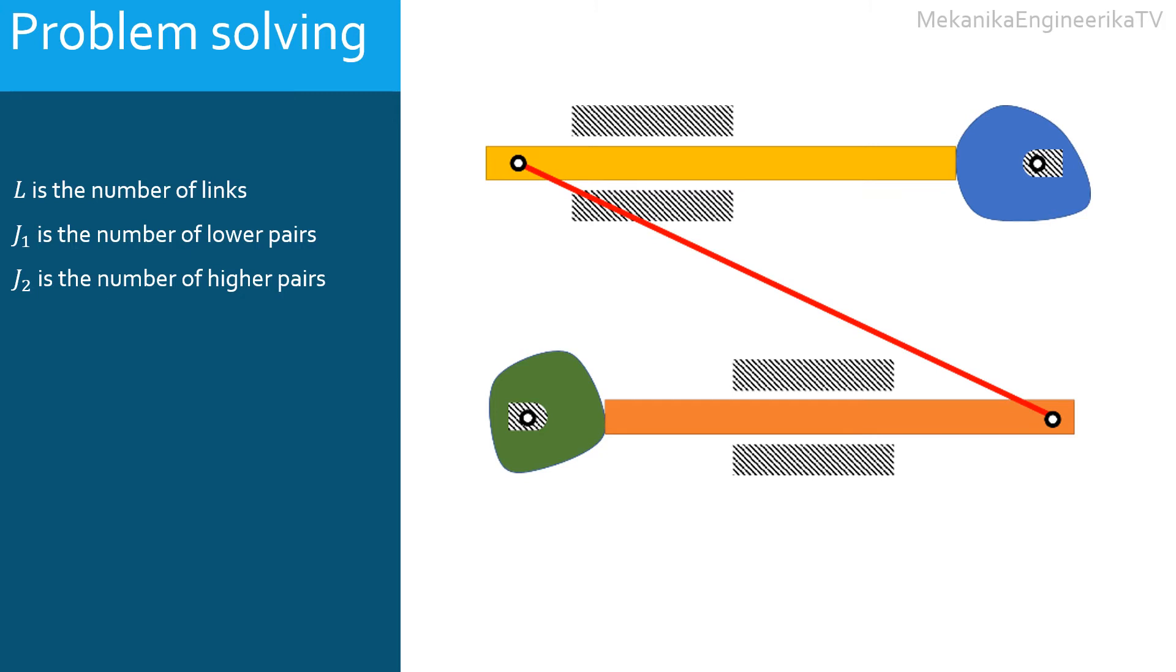Finally, we will calculate mobility M as 3 times L minus 1, minus 2 J1, minus J2.